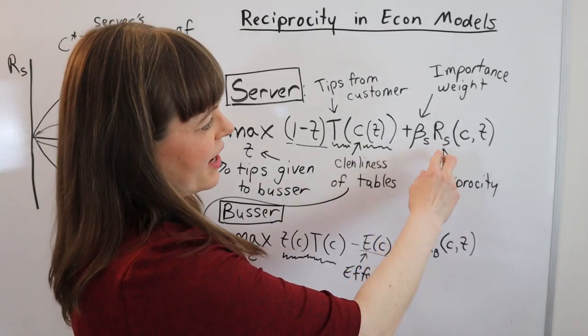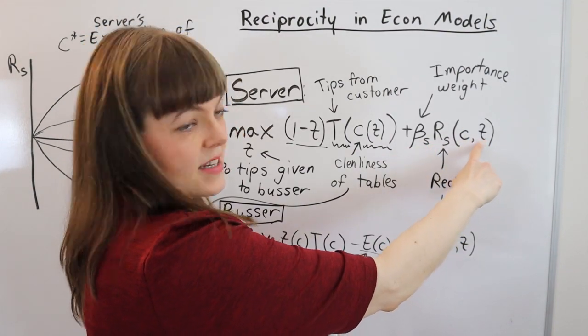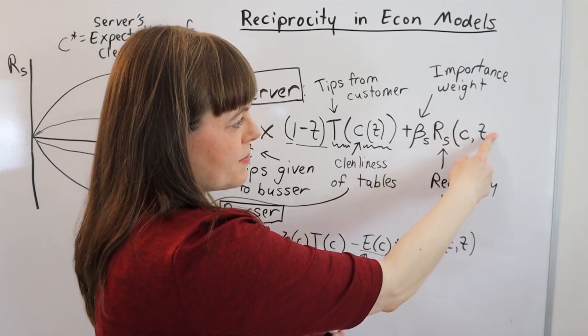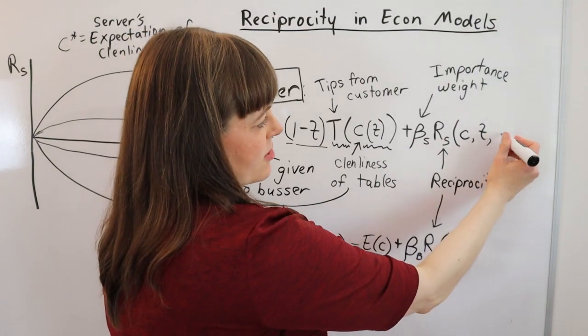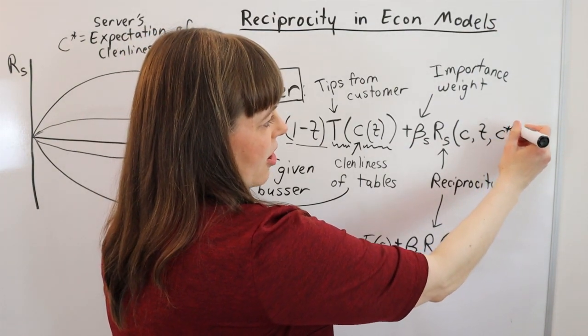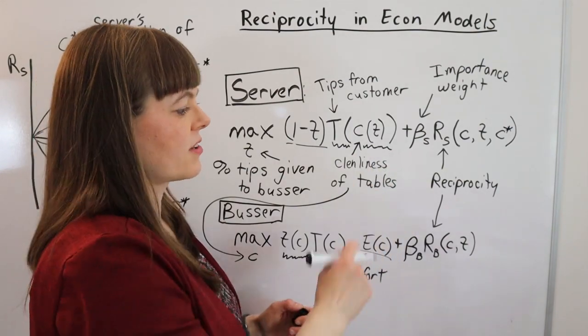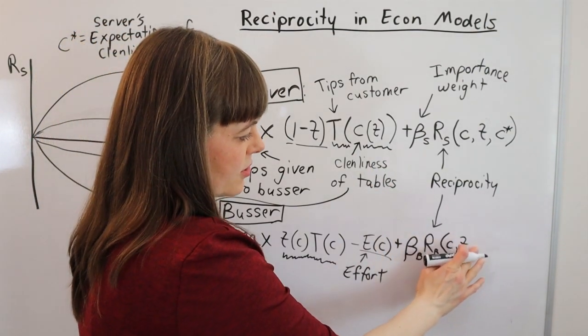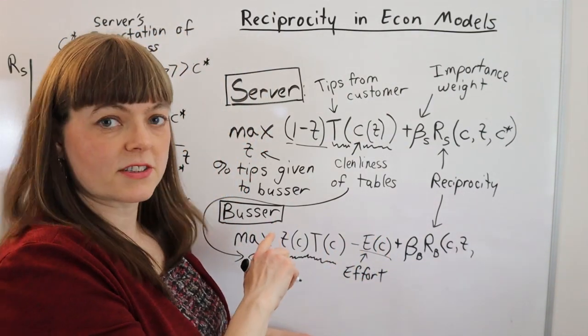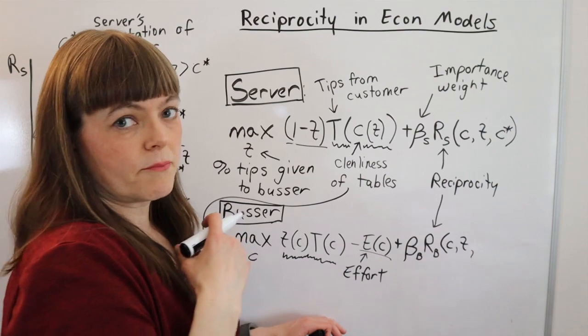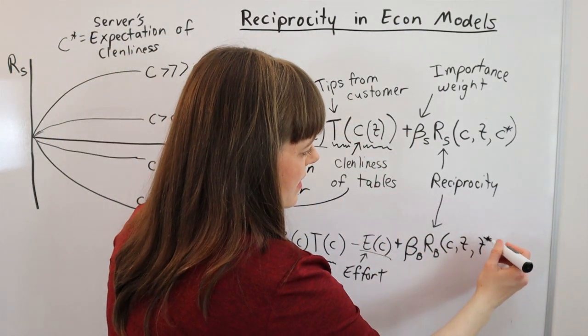So I come back to the model. I look at reciprocity and I realize it does not just depend on cleanliness and tips. It also depends on the expectation that the server has about the busser's cleanliness. So C* is something that is different than C that will matter a lot for feelings of reciprocity. And similarly, we need to have an expectation about the percentage of tips from the busser. The busser needs to expect the server to give a certain amount of tips and that can be T*.